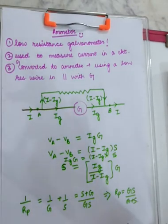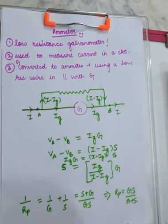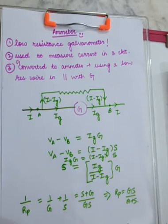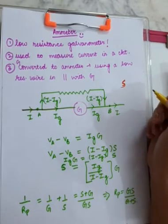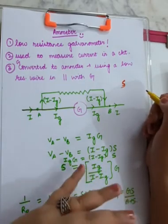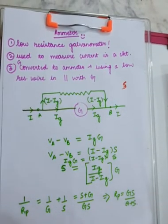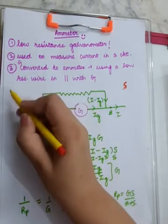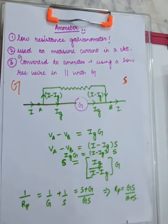To convert a galvanometer into an ammeter, first you need a galvanometer, and then you connect it with a shunt — a resistance connected in parallel, the same theory discussed before. But the question is: how do we decide the value of the shunt? What resistance should we use exactly so that the galvanometer gets converted into an ammeter? Let me explain. First, I need to introduce you to a few terms I will be using frequently.